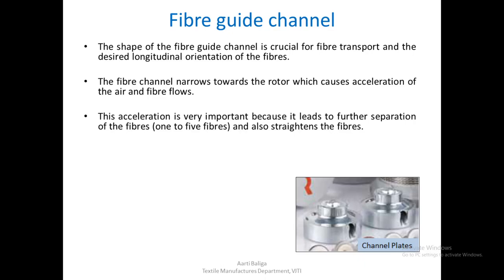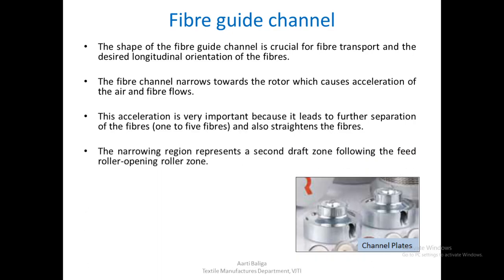At this narrowing region, a second draft is applied. The fibers fed to the rotor are around 1 to 5 fibers at a time, which then slide down the rotor wall and form the fiber ring. The narrowing region represents the second draft, while the first was in the feed roller and opening roller zone.